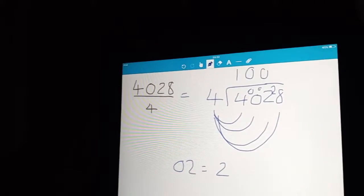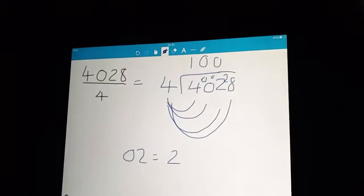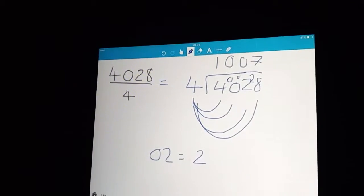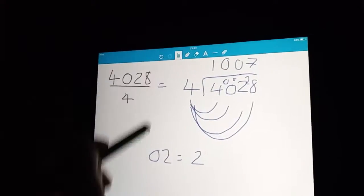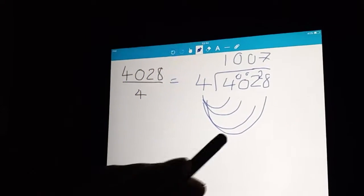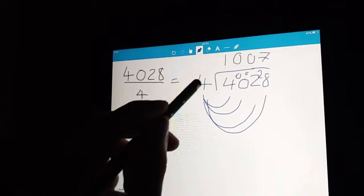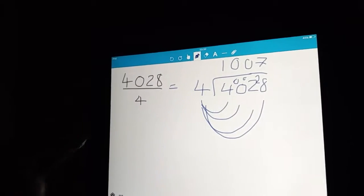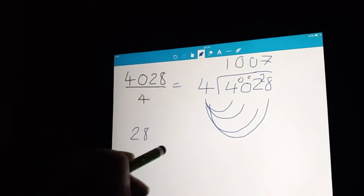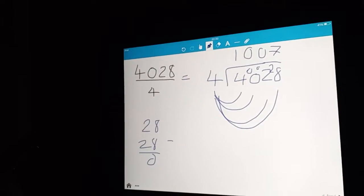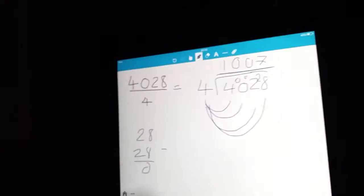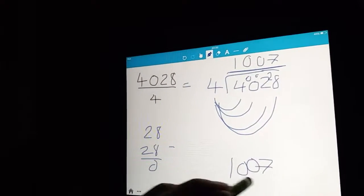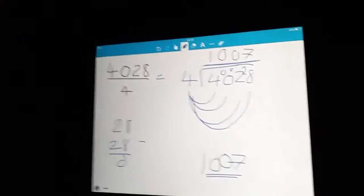Lastly, how many 4s go into 28? Well, that's 7. Hopefully you know that from your times tables. We know there's no remainder because you do the subtraction of this number times by this number. So 4 times 7 is 28. It's 28 minus 28, that's 0. So there's no remainder. This is our final answer, because we've got no numbers left. So that's 1,007 as the final answer. That was pretty easy, really.